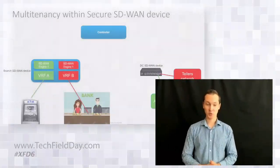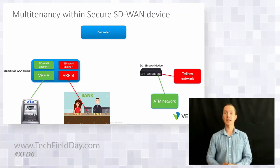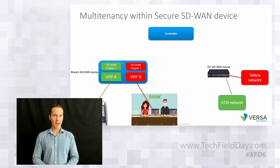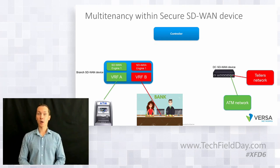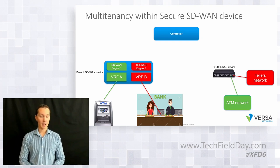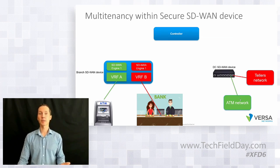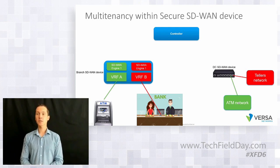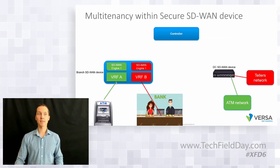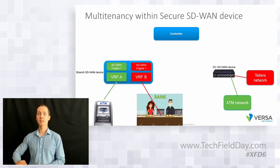The last portion we'll discuss today is multi-tenancy in Versa networks. This is a very common example which a lot of our financial institution customers are using. Imagine a bank which has an ATM network and a teller's network — they have independent data centers, or maybe the same data center, but one PCI DSS requirement is that each of these networks, especially ATM, should have completely different independent media.